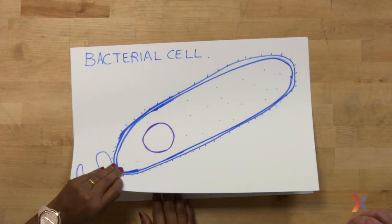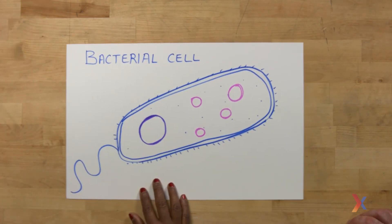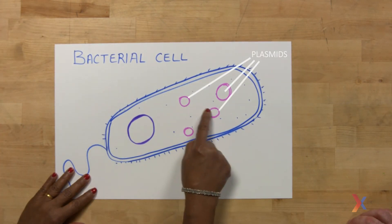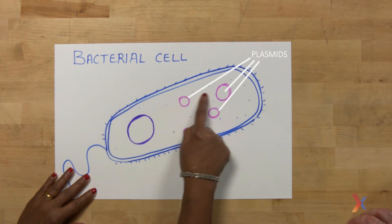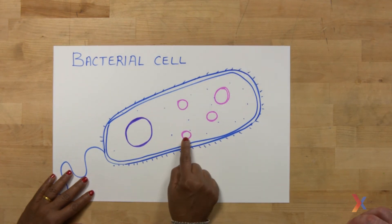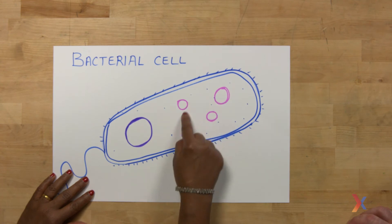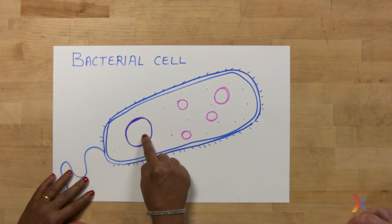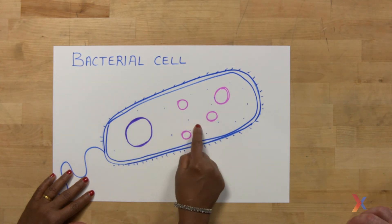Now, in addition to this bacterial chromosome, bacteria contain several small or large circular structures. And this also is DNA. It is these loops, in addition to the bacterial chromosome, which are referred to as plasmids.